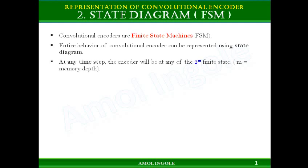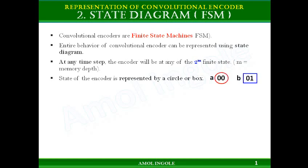At any time step the encoder will be at any of the 2 raised to power m finite states, where m is the depth of memory. The state of the encoder is represented by a circle or a box. So if the encoder is in the 00 state, you can show that state in the state diagram by a circle with the state written inside it as '00', or you can also use a box with the state written inside.